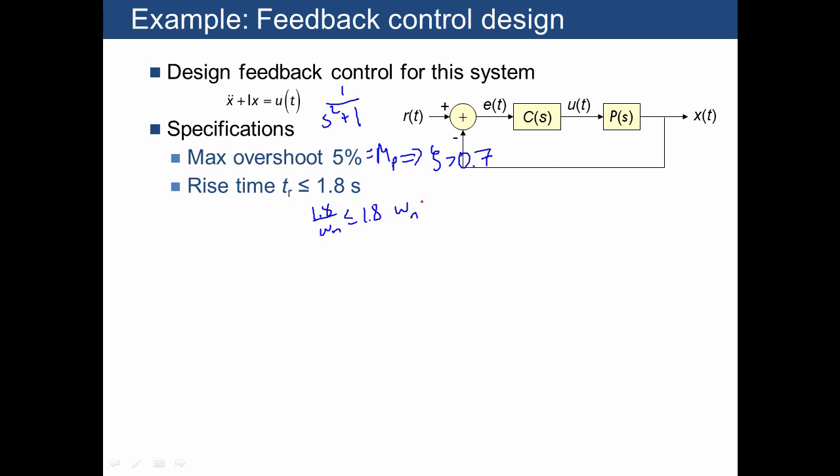And this has been chosen a little bit fortuitously because that just means that we need an omega n of at least 1. So now we have some desired locations in the complex plane, and so we're ready to design our controller.